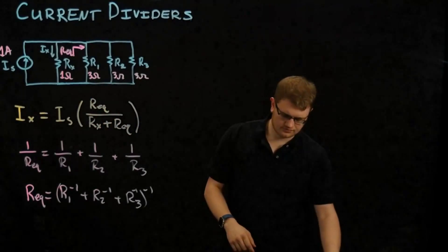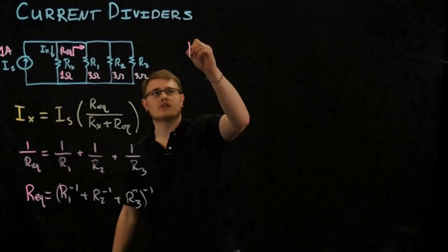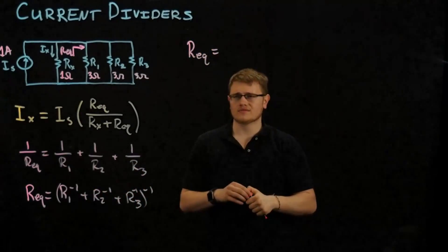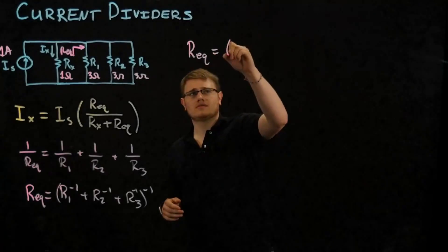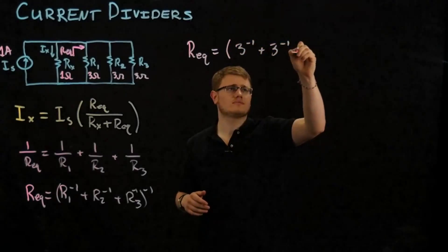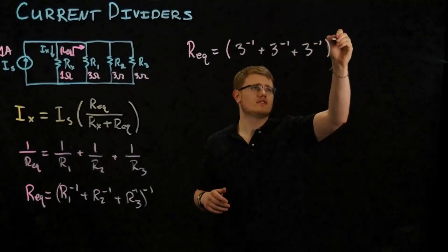So what do we do? We have this formula over here, R equivalent, but we don't really need the formula. We know how to solve resistors in parallel, right? We have three to the negative one plus three to the negative one plus three to the negative one, all to the negative one.